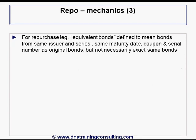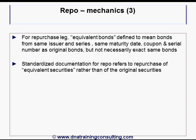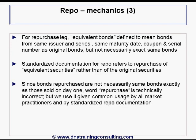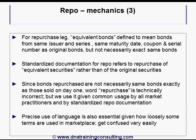For the repurchase leg, equivalent bonds are defined to mean bonds from the same issuer and series, and therefore having the same maturity date, coupon, and serial number as the original bonds, but not necessarily the exact same bonds. Since the bonds repurchased are not necessarily the exact same bonds as those sold on day one, the word 'repurchase' is technically incorrect, but given its common usage by all market practitioners and by the standardized repo documentation, we will use it as well. Precise use of language in this area is essential given how loosely some terms are thrown around in the marketplace.